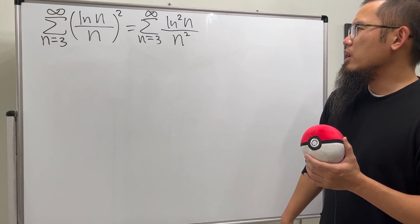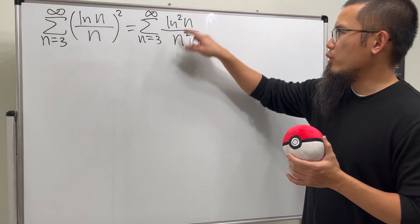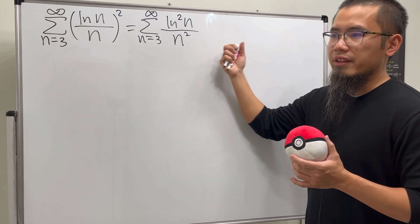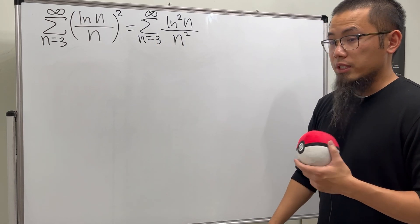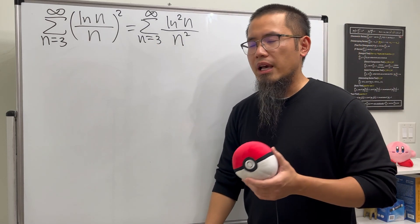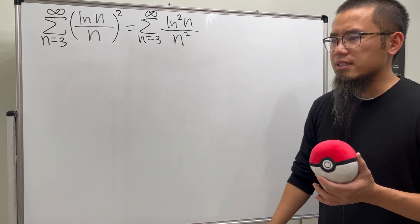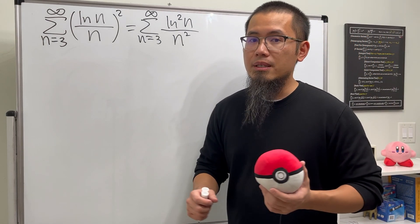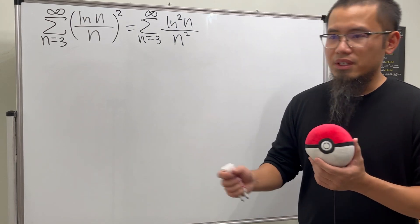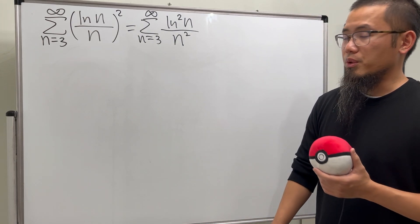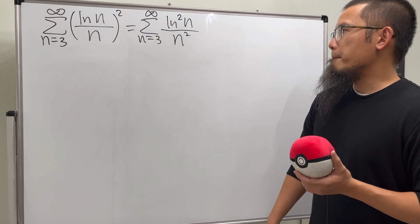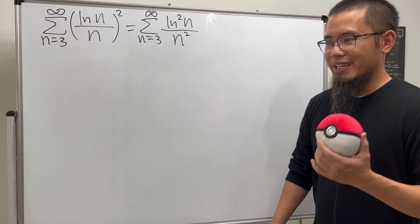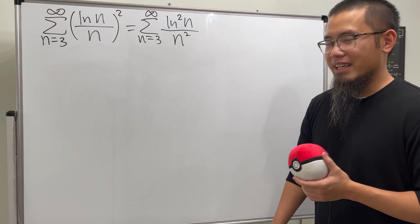If you try comparing to the series of 1/n², unfortunately the original is bigger than that convergent series, so the direct comparison test would not work. You could also try the limit comparison test, but working it out gives a limit of infinity, so that is not going to work either.